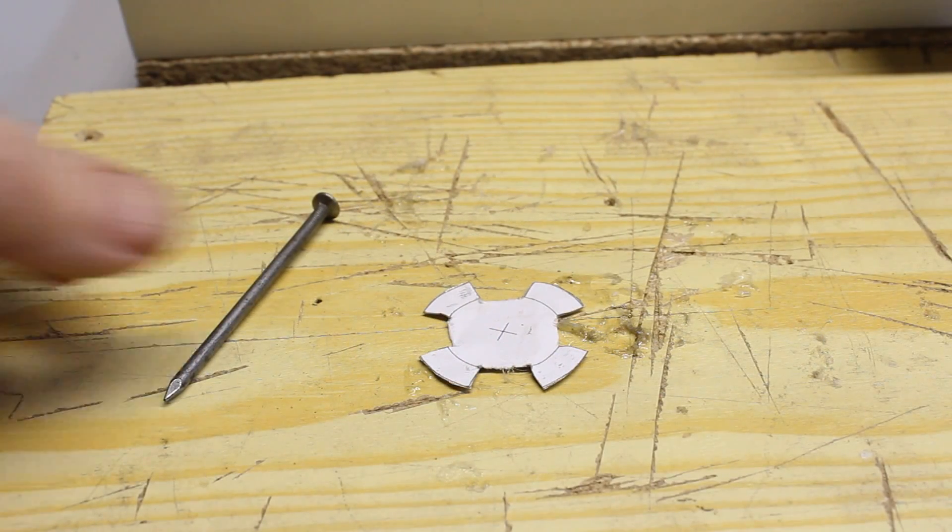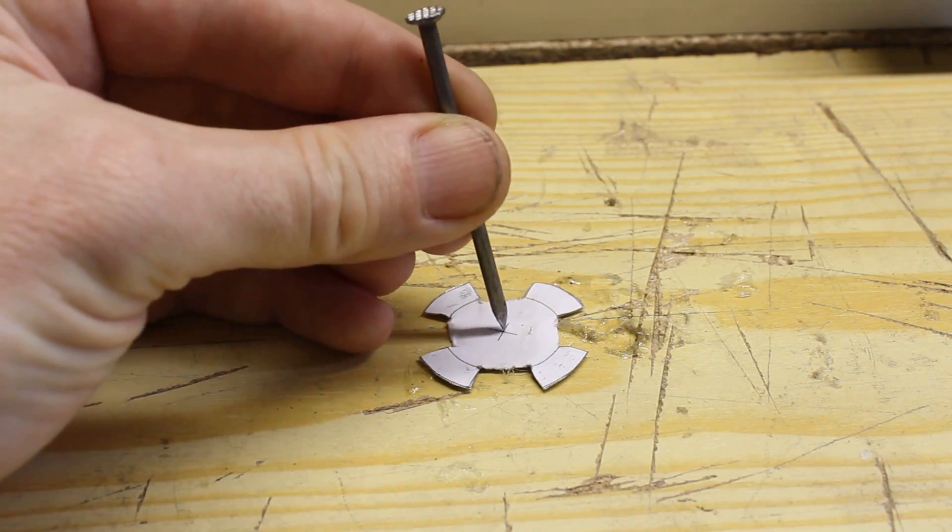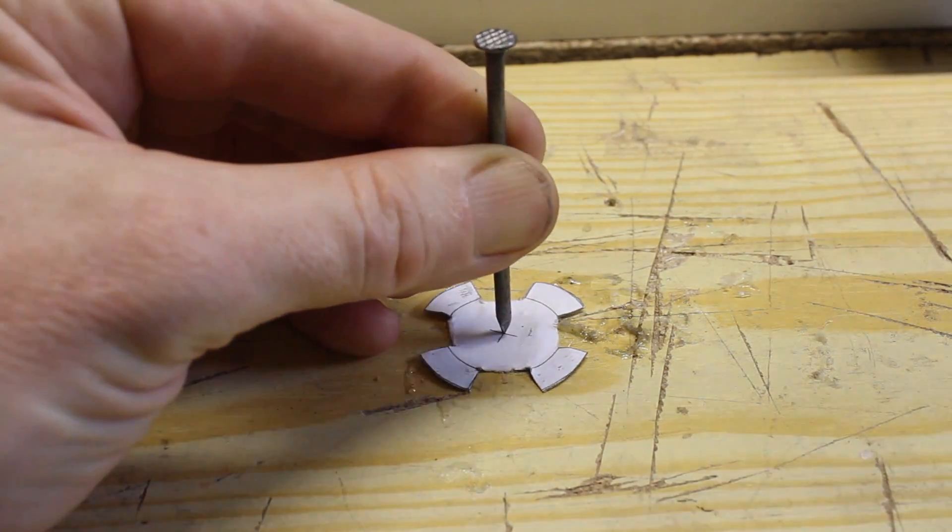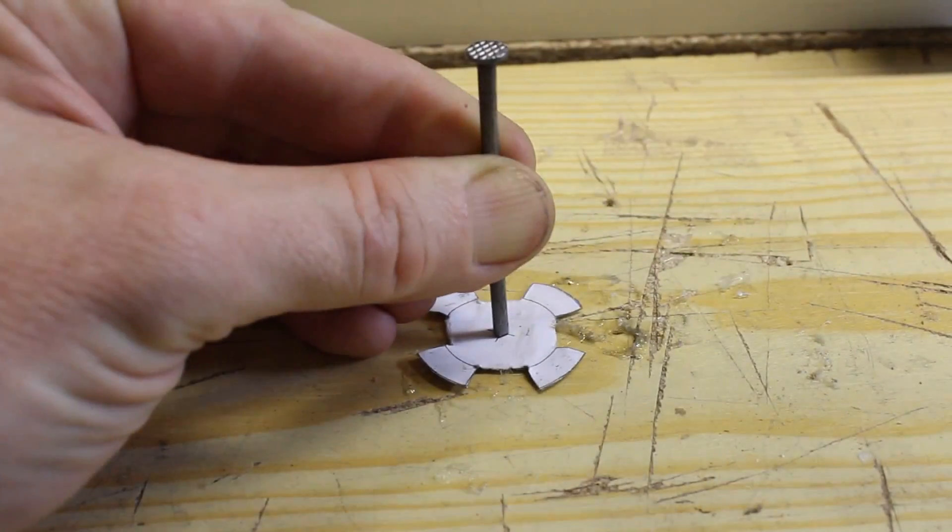The sensor disc for the rotary encoder is cut from a tin can. That's what scissors or metal shears are good for, the center hole is made without a drill.